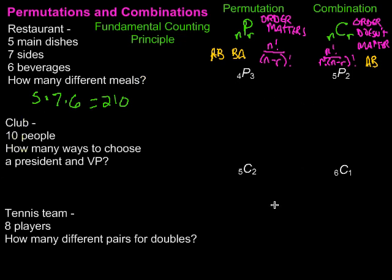We have a club with 10 people and we want to know how many ways there are to choose a president and a vice president. Our first question is: does order matter? Is someone being president different from being vice president? Yes — Billy as president and Joey as vice president is different from Joey as president and Billy as vice president. So order matters, making this a permutation.